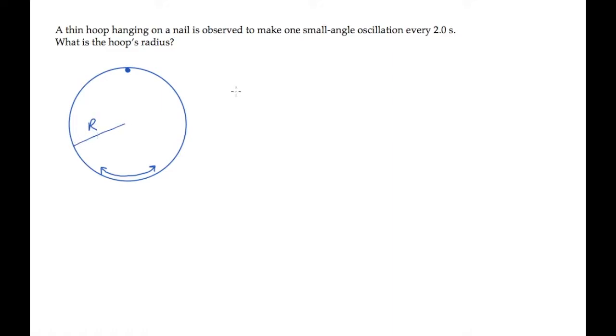The hoop is a physical pendulum with a period of small oscillations equal to 2π times the square root of the moment of inertia I over mg times d, where d is the distance from the center of mass, that's the center of the hoop, to the pivot for the oscillations.